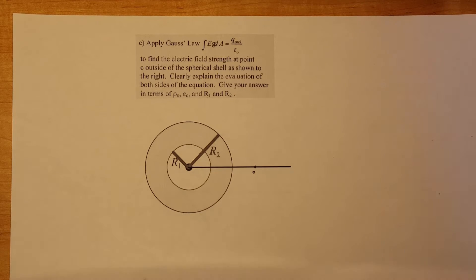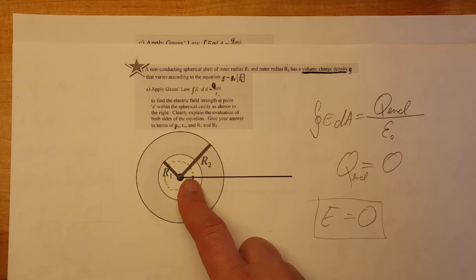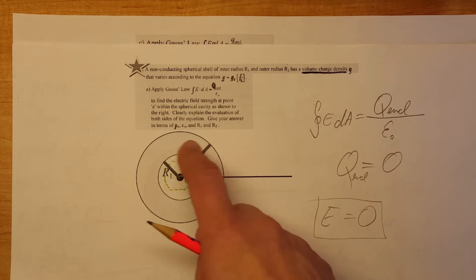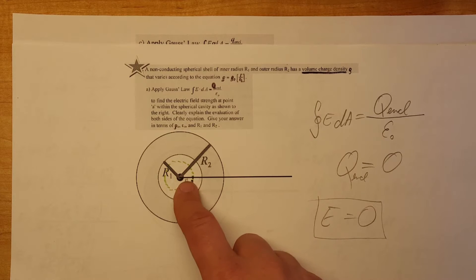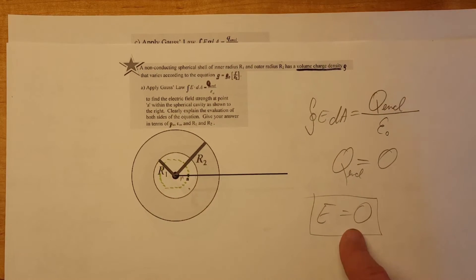In the first video we found the electric field for a non-conducting spherical shell. We found the electric field inside the cavity at point A. We found it to be zero.